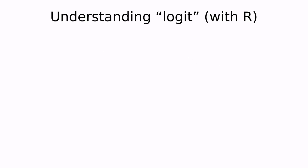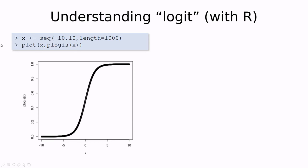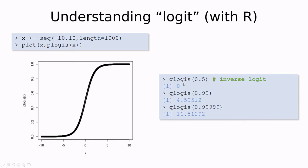Let's understand the logit function using R. If we generate a sequence between minus 10 and 10, we can use the function plogis in R. Plotting this function gives the sigmoid shape. You can explore the inverse using qlogis: qlogis of 0.5 is 0, qlogis of 0.99 is a large value, and qlogis of 0.9999 is an even larger value. This is a way to translate between real numbers and probabilities between zero and one.